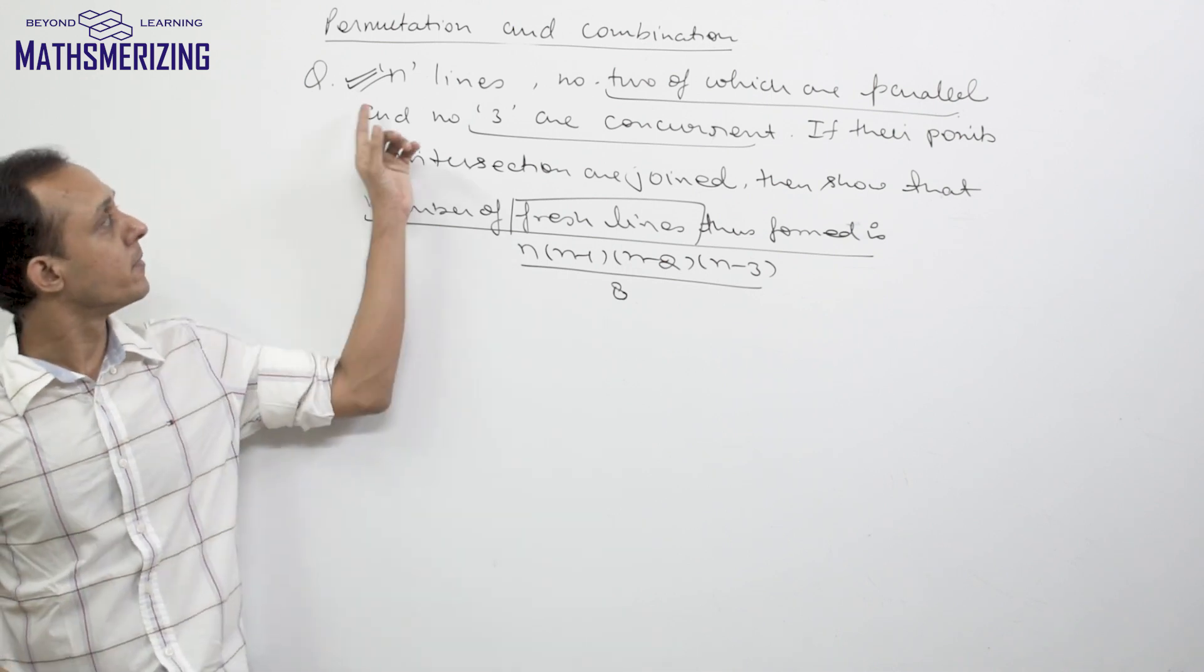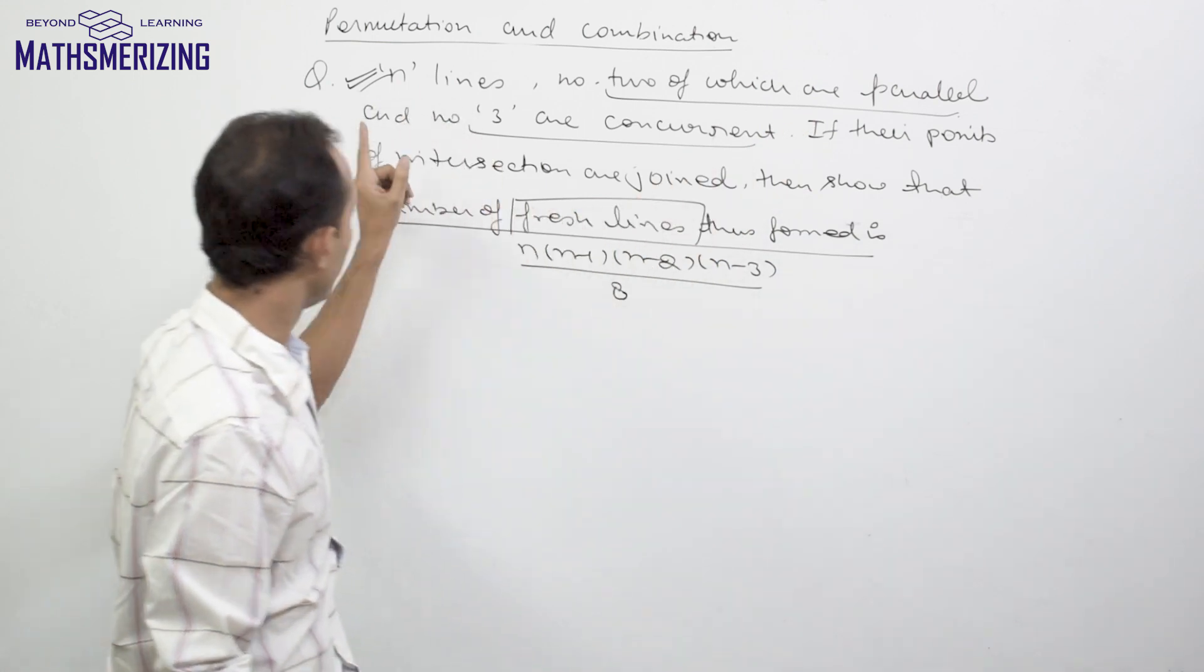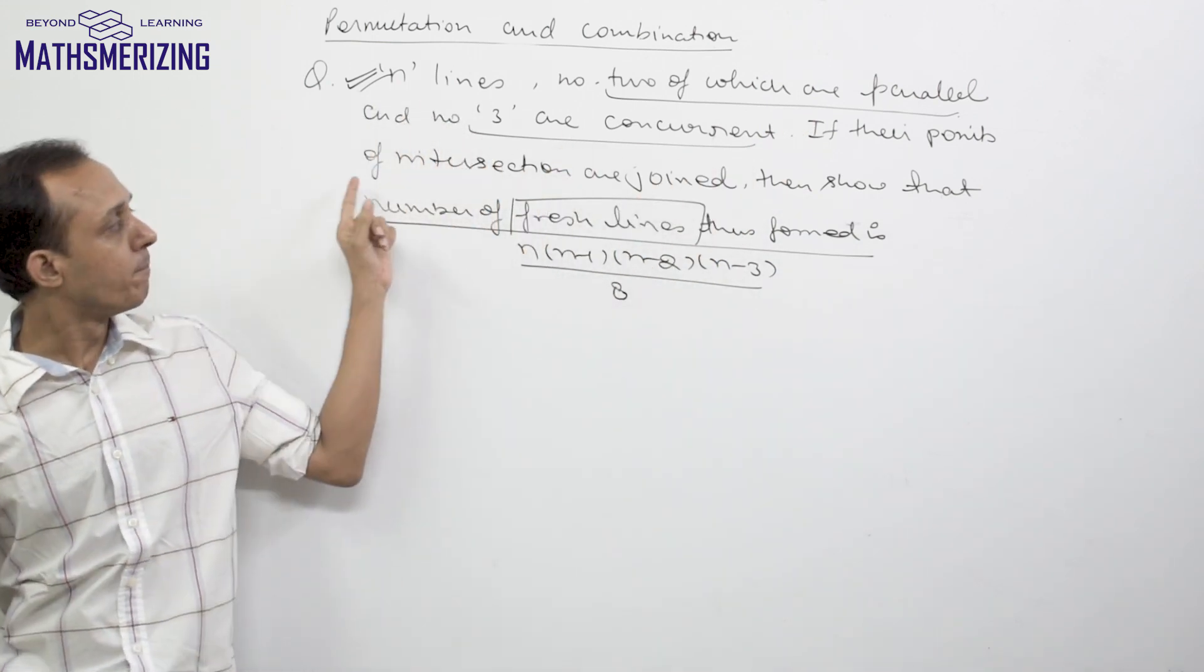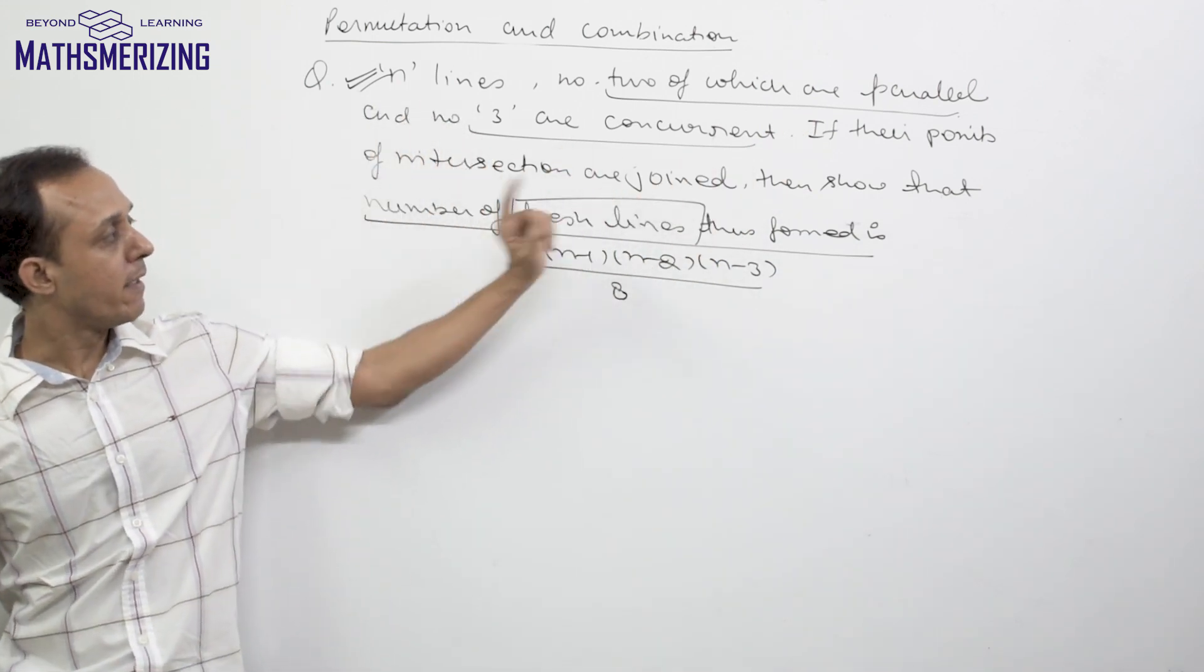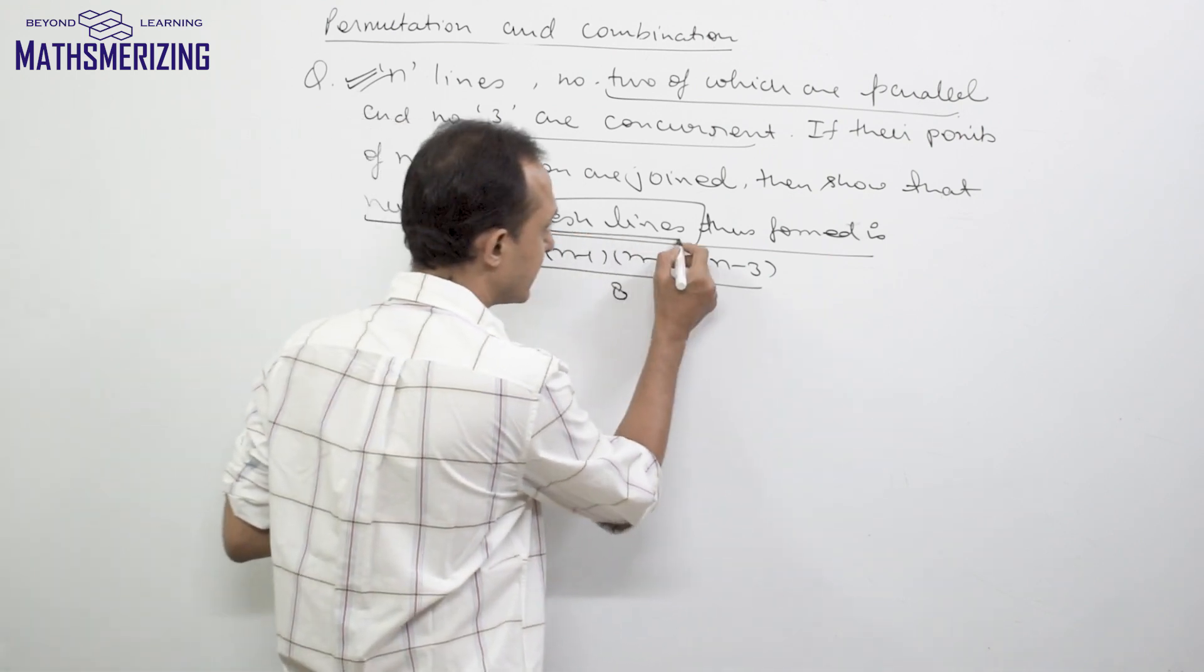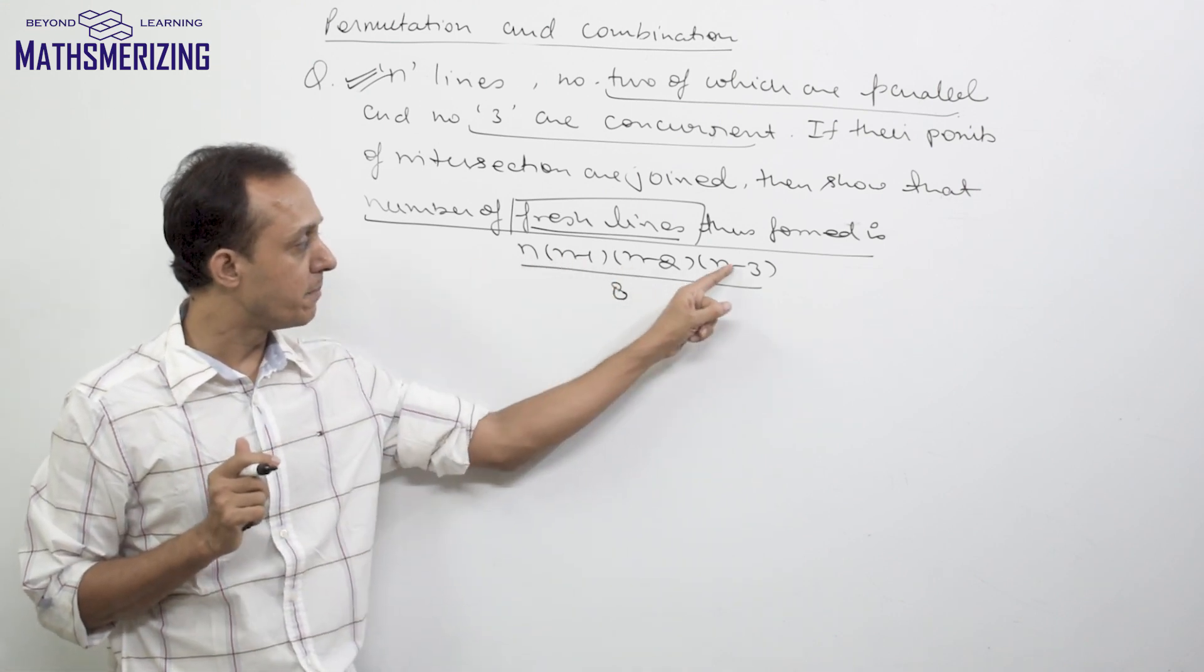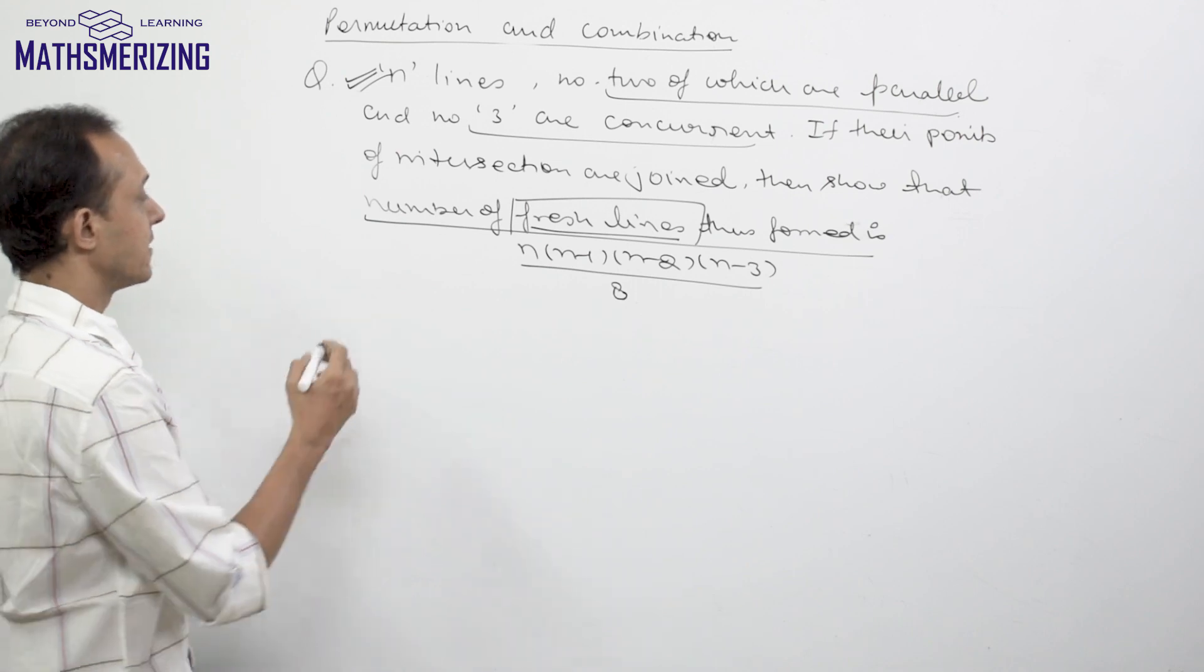Now let us take another question. Suppose there are n lines and no 2 of which are parallel and no 3 are concurrent. If their points of intersection are joined, then we need to show that the number of fresh lines, new lines thus formed is n(n-1)(n-2)(n-3)/8.